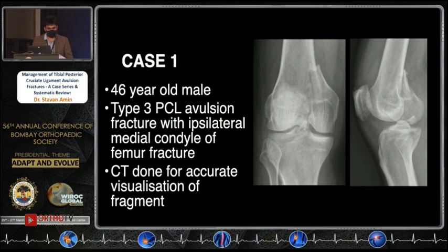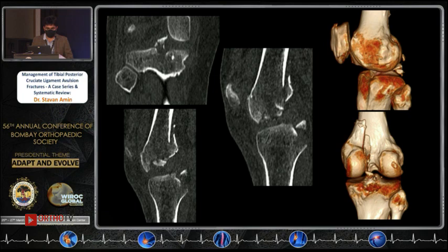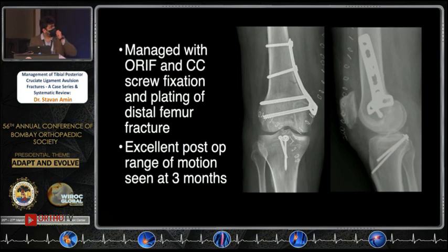The first case is a 46-year-old male with a Type 3 PCL avulsion fracture as well as a medial condyle fracture of the distal femur. A CT scan clearly showed the PCL avulsion fragment, along with the medial condyle fracture visible on 3D reconstruction. We managed this with open fixation of the distal femur using a medial plate, as well as PCL avulsion open fixation.